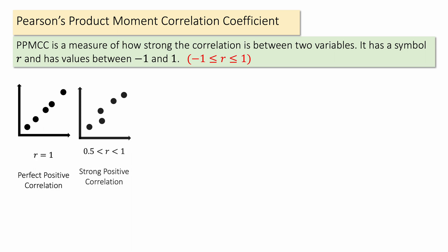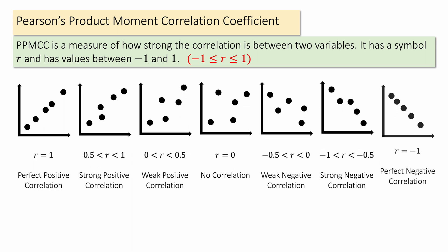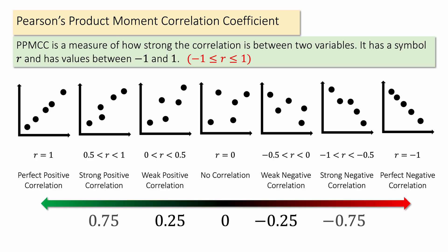For different scatter graphs, the value of r is displayed here. You can see that when it's a perfect positive correlation, the value of r is one. And all the way on the right hand side, a perfect negative correlation has a value of minus one. The graphs in between show you the value of r for different correlations, and the closer r is to one or minus one, the stronger the correlation is.